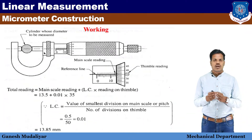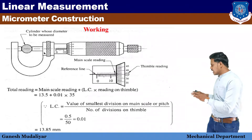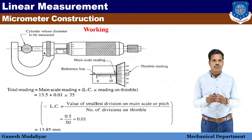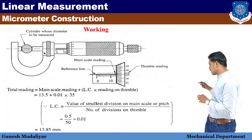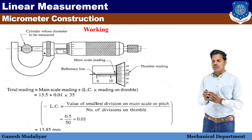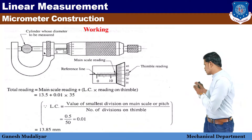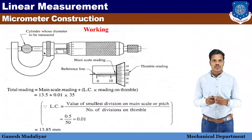The total reading equals main scale reading plus least count multiplied by circular scale reading. The main scale reading is 13.5. Plus least count 0.01 multiplied by circular scale reading of 35 — you can see the 35 marking matches here. So the total reading is 13.5 plus 0.35, that is equal to 13.85 mm. That is the total reading of this micrometer.